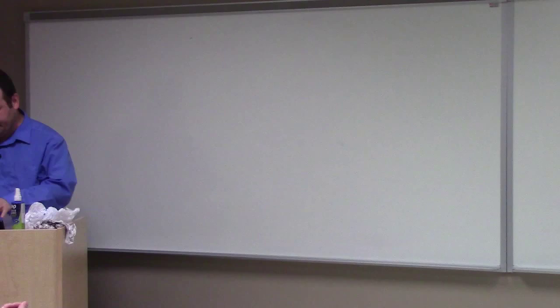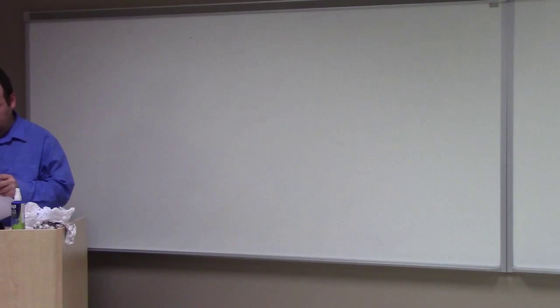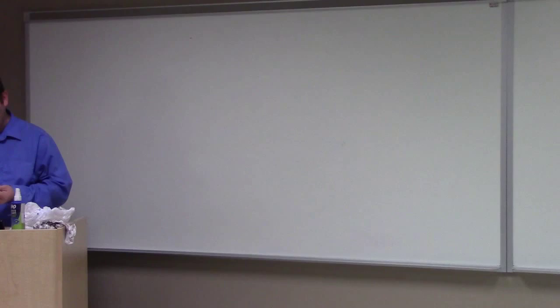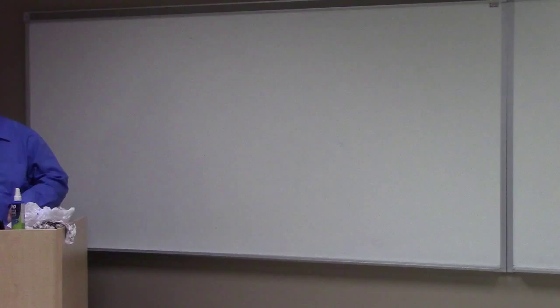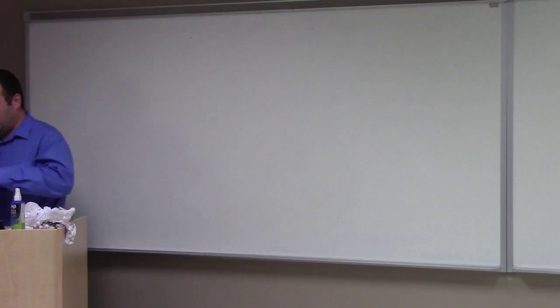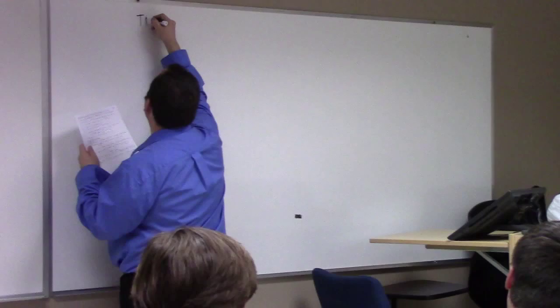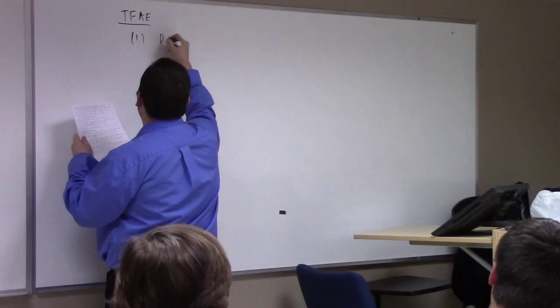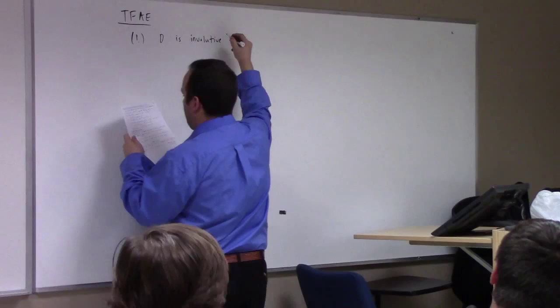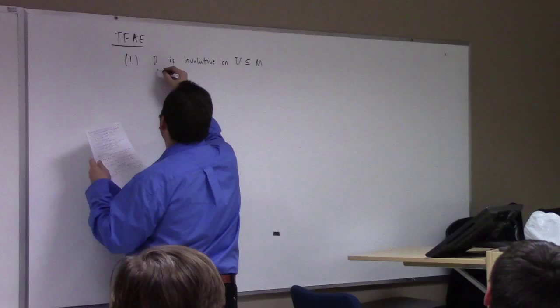So I had presented to you guys the Frobenius Theorem, give or take. We talked about distributions. We talked about annihilating one-forms, because ultimately we came to this list of equivalent statements, which I think is useful to reproduce again. Basically, here are the following equivalent statements. One: D is involutive on U, a subset of M. Here, D could be a k-dimensional smooth distribution.